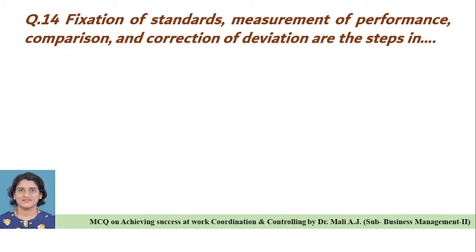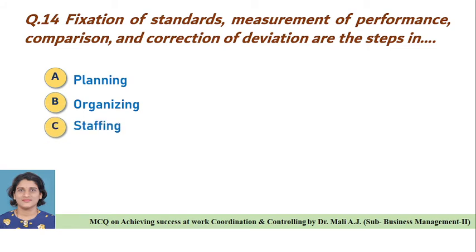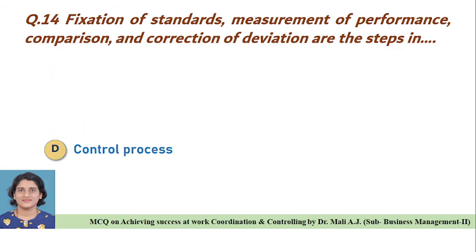Question fourteen: Fixation of standards, measurement of performance, comparison and correction of deviation are the steps in — Option A: planning, Option B: organizing, Option C: staffing, Option D: control process. Correct answer is Option D, these are the steps in the control process.